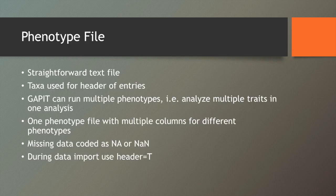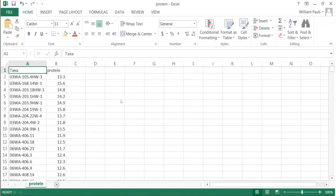If your data is not in HapMap format, not to worry — GAPIT handles lots of different formats. The phenotype file is pretty much just a straightforward text file. Use 'taxa' as the header for the entries, and GAPIT handles multiple phenotypes. When you submit the phenotype file, you need to have each trait in its own column. Missing data should be coded as NA or NAN, and when you import the data use header equals true. When GAPIT runs, it sees multiple columns and automatically does a GWAS for each trait, with no extra programming required on your part.